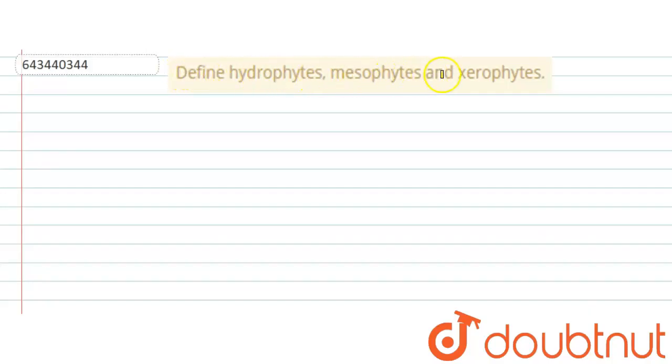Define hydrophytes, mesophytes and xerophytes. Let's start writing the answer. Hydrophytes, xerophytes and mesophytes are classifications of plants. On the basis of habitat, plants are classified into these three types.